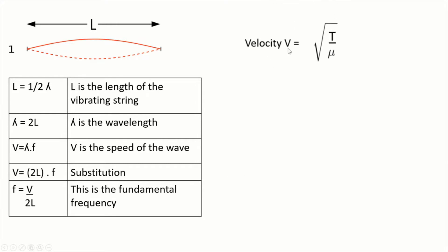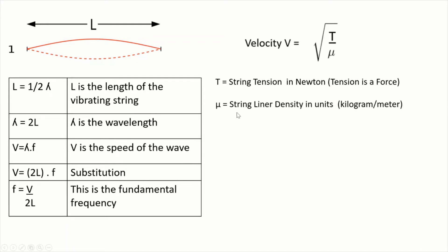Now let's incorporate the velocity of the string in terms of tension and the density of the string, which means the material. T is the string tension in Newtons, and this density is called string linear density, in units of kilograms per meter, represented by the Greek letter mu. Our fundamental frequency is speed over two times the length, so replacing speed gives the final formula: f = (1 / 2L) × √(T / μ). Let's do a couple of problems.